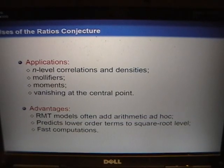For example, the L-function ratios conjecture predicts the answer to this statistic, which can be used to discover things about n-level correlations and densities, mollifiers, moments, and vanishing at the central point.